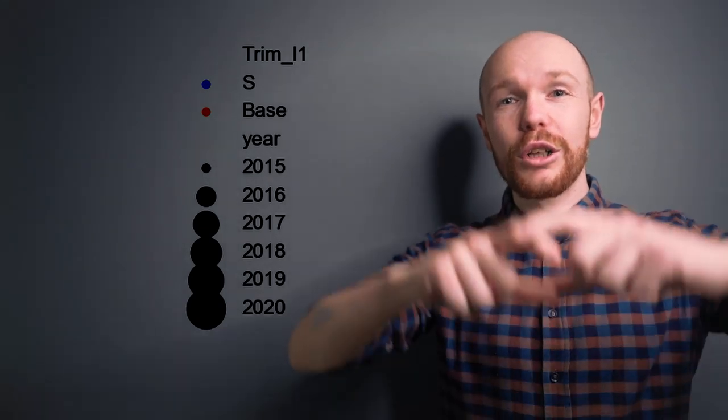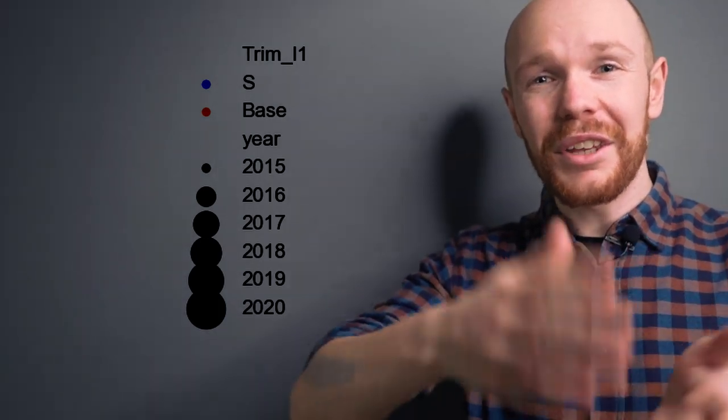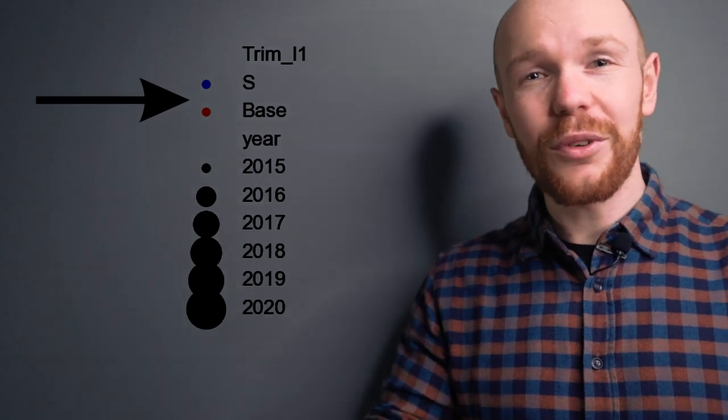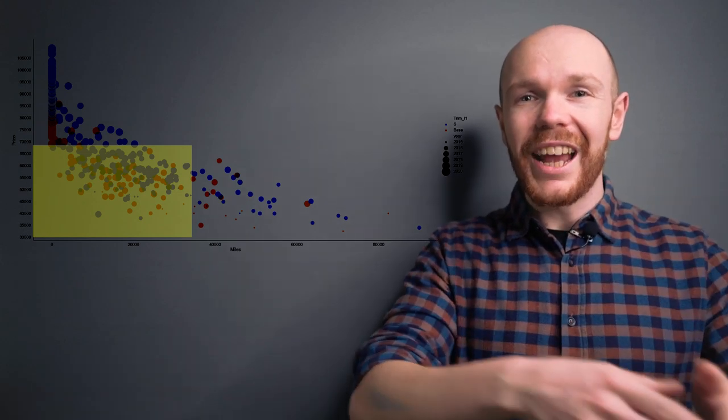First, you can see that they have different sizes. It is so that the larger the size of the bubble, the newer the model year of the car. Second, you can see that they have different colors and that's because the S version is displayed in blue and the standard version in orange. And in this graph, you want to look for a bubble which has the lowest mileage, the newest model year and the lowest price.